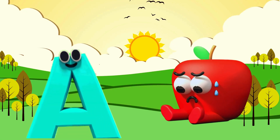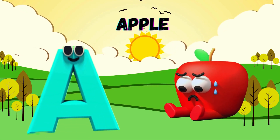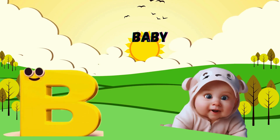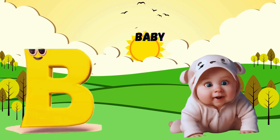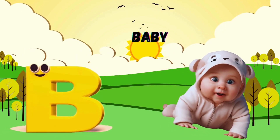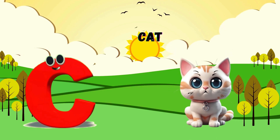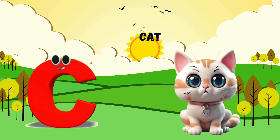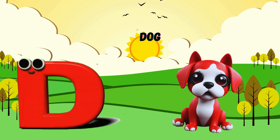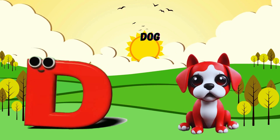A is for Apple. A, A. Apple. B is for Baby. B, B. Baby. C is for Cat. C, C. Cat. D is for Dog. D, D. Dog.